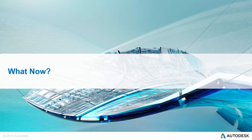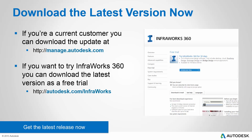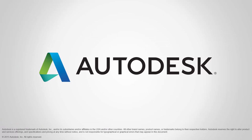Now that you've seen all the exciting new capabilities that InfraWorks 360 has in this summer 2015 update, what do you do next? Of course you're going to download the latest version. If you're a current customer, you can do that at manage.autodesk.com. Or if you want to try out the latest version of InfraWorks 360, you can go to autodesk.com/InfraWorks, click free trial, and simply download and install the 30-day fully functional free trial. Go out and get the latest release right now — you're going to want to test out this exciting new functionality in the summer release of InfraWorks 360. Thank you and have a great day.